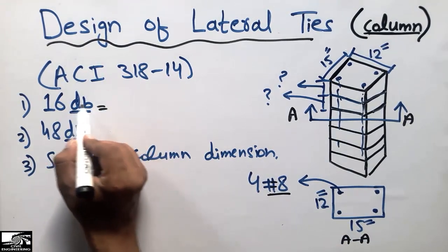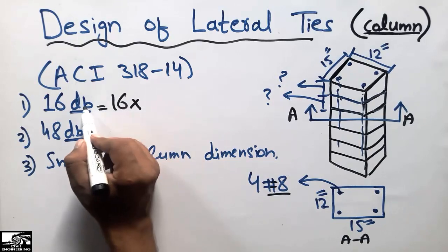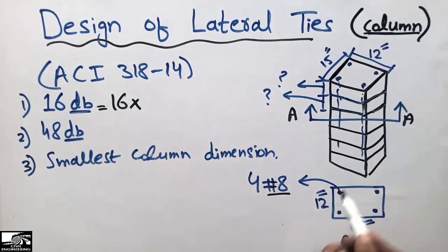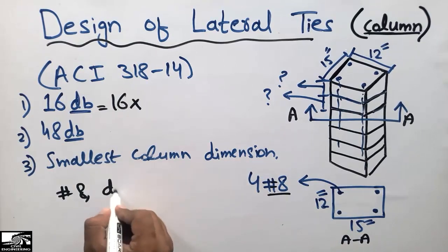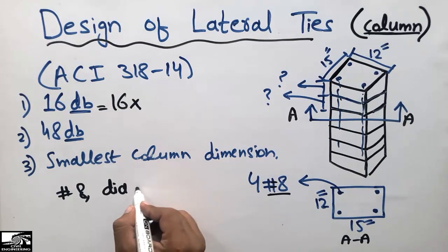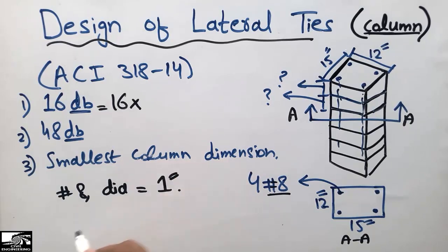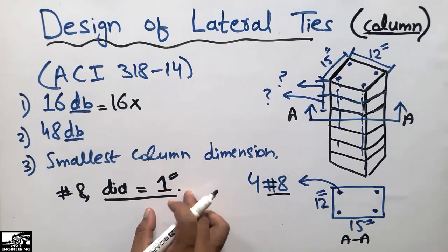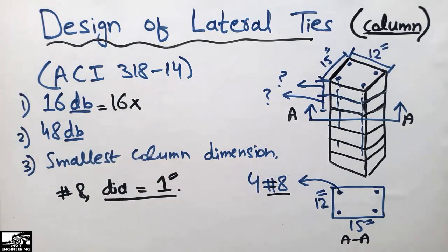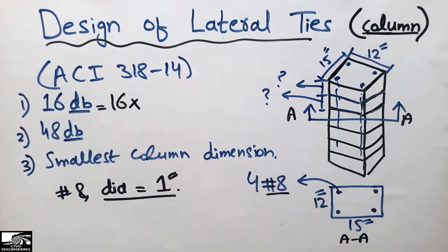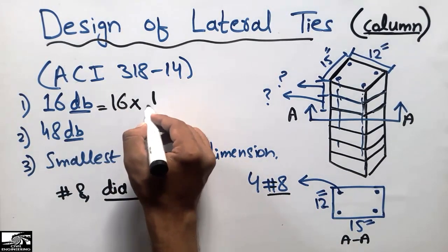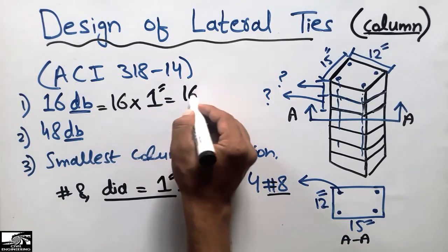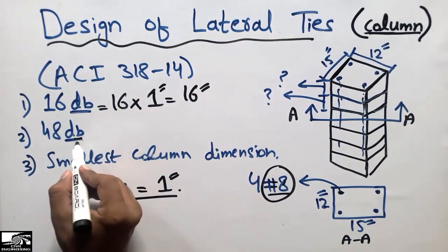Now applying the values: for Formula 1, we have 16 times the diameter of the longitudinal bar. The longitudinal bars are number eight bars, and the diameter of a number eight bar is 1 inch. So 16 × 1 inch = 16 inches. You can also watch my video on how to find the diameter and area of each bar on my YouTube channel.